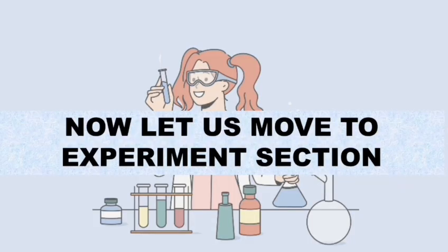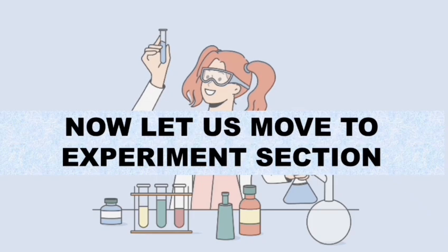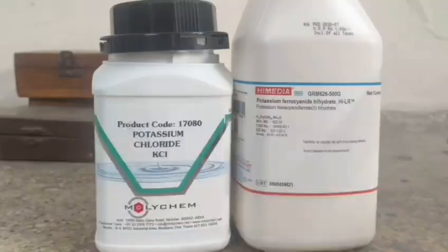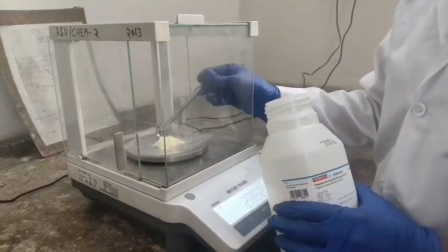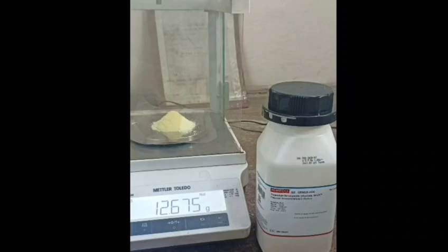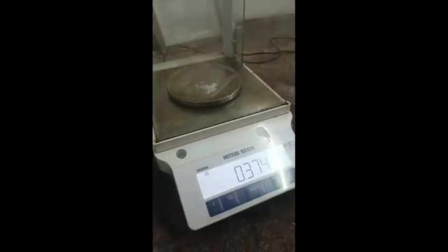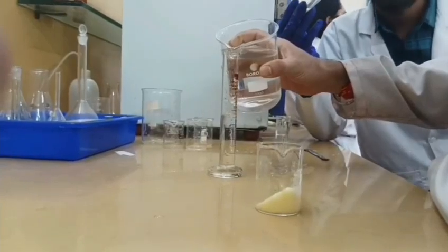Now let us move to the experiment section. For the experiment section, we need to take two chemicals: KCl and potassium ferrocyanide. KCl we have to take 0.372 gram and potassium ferrocyanide 12.671 gram.